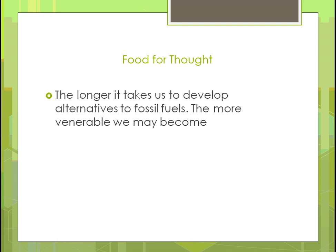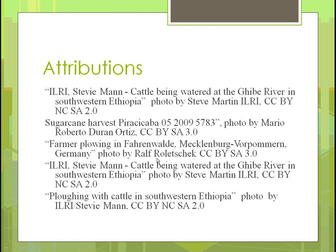The longer it takes to develop alternatives to fossil fuels, the more vulnerable we become. By 2050, there may not be enough resources to produce the food needed to feed the world's population, which could cause serious conflicts over crops. The more we can eliminate fossil fuel use in agriculture, the better — and those are the attributions for Part 1 of Unit 12.